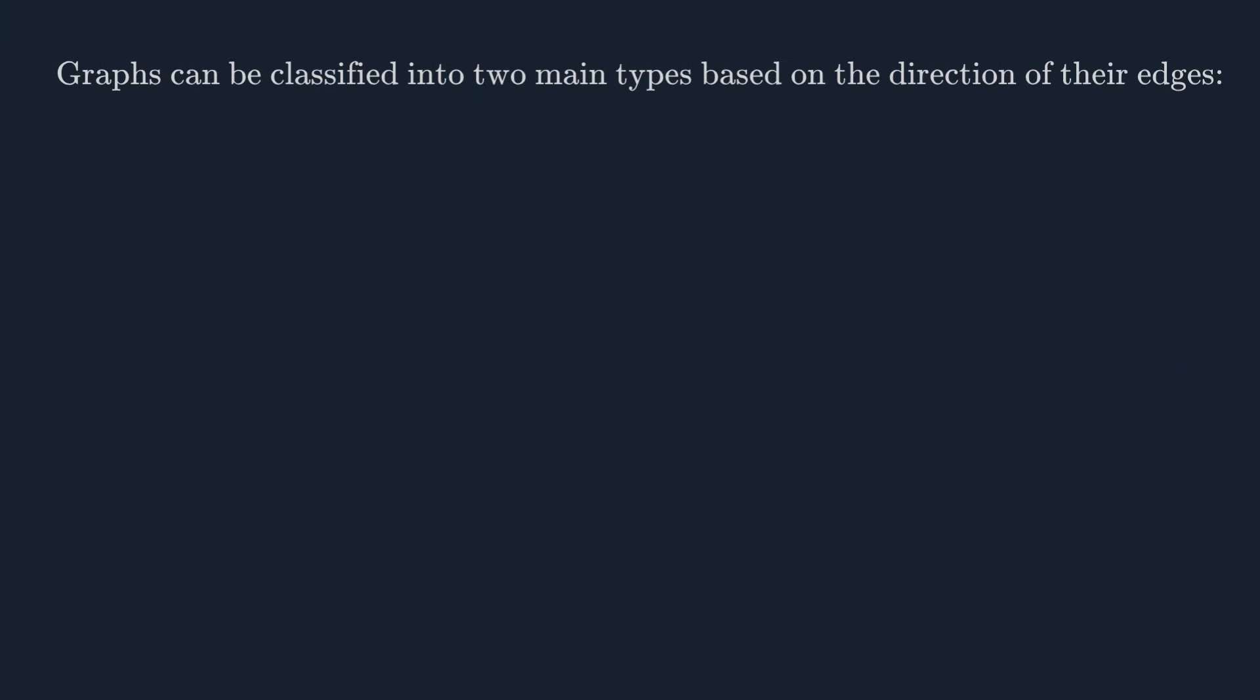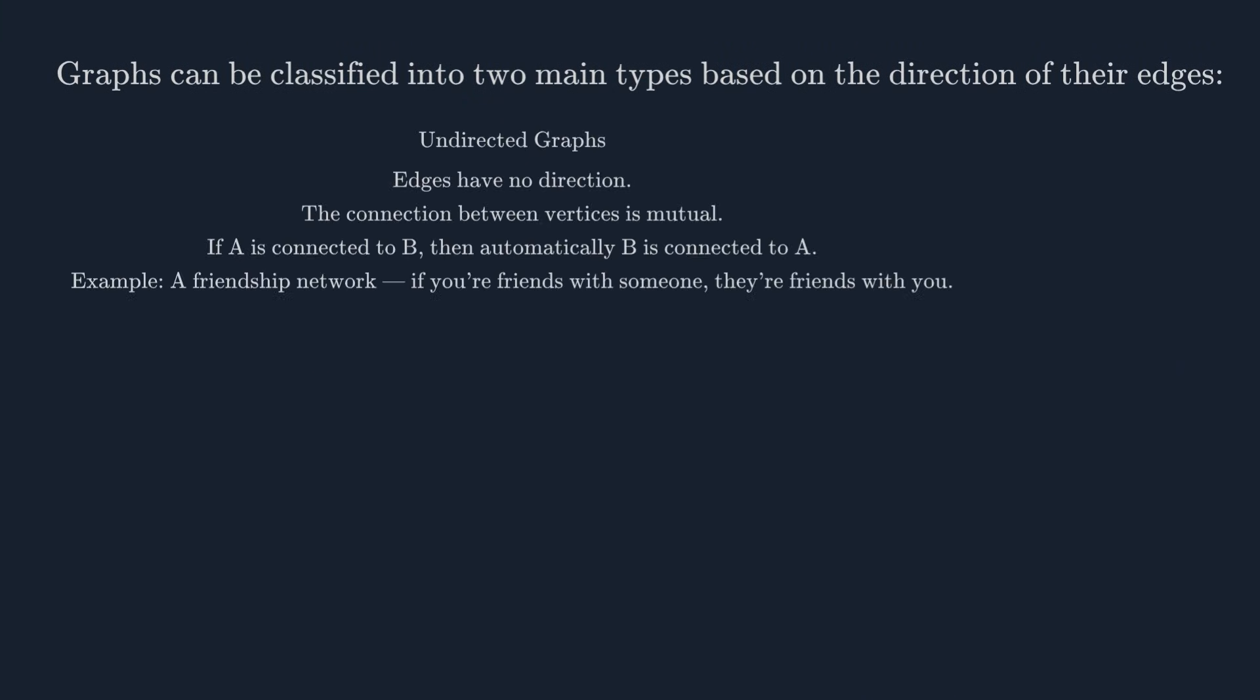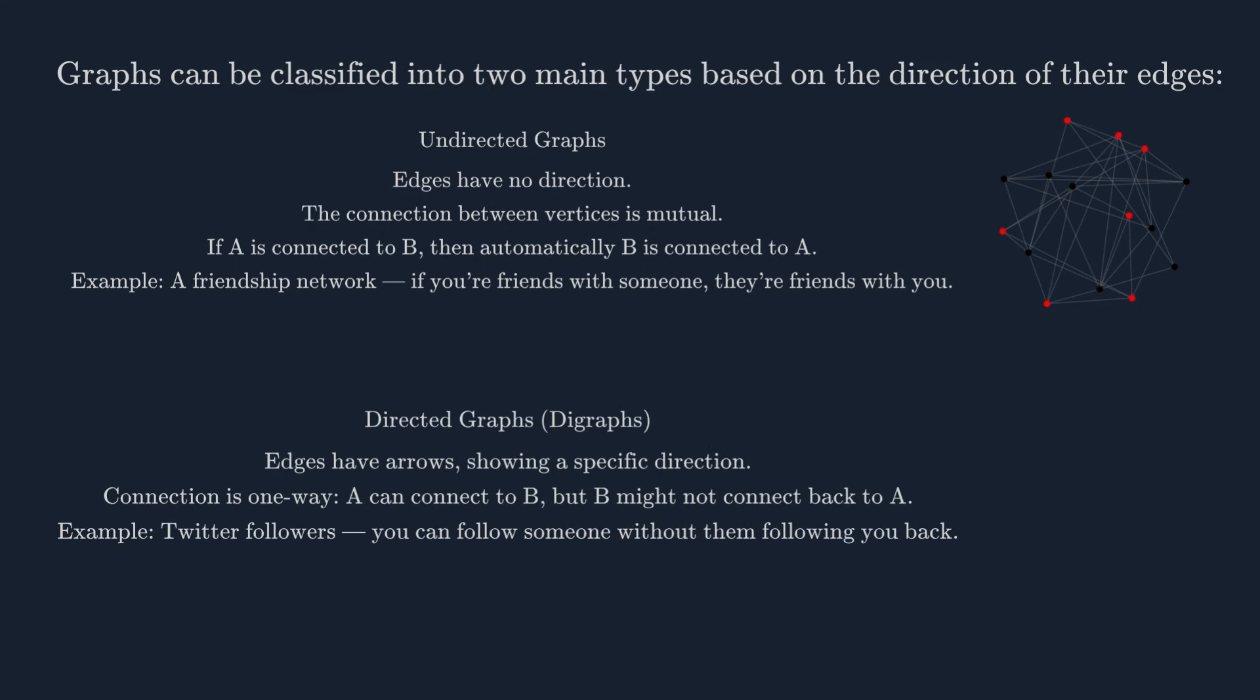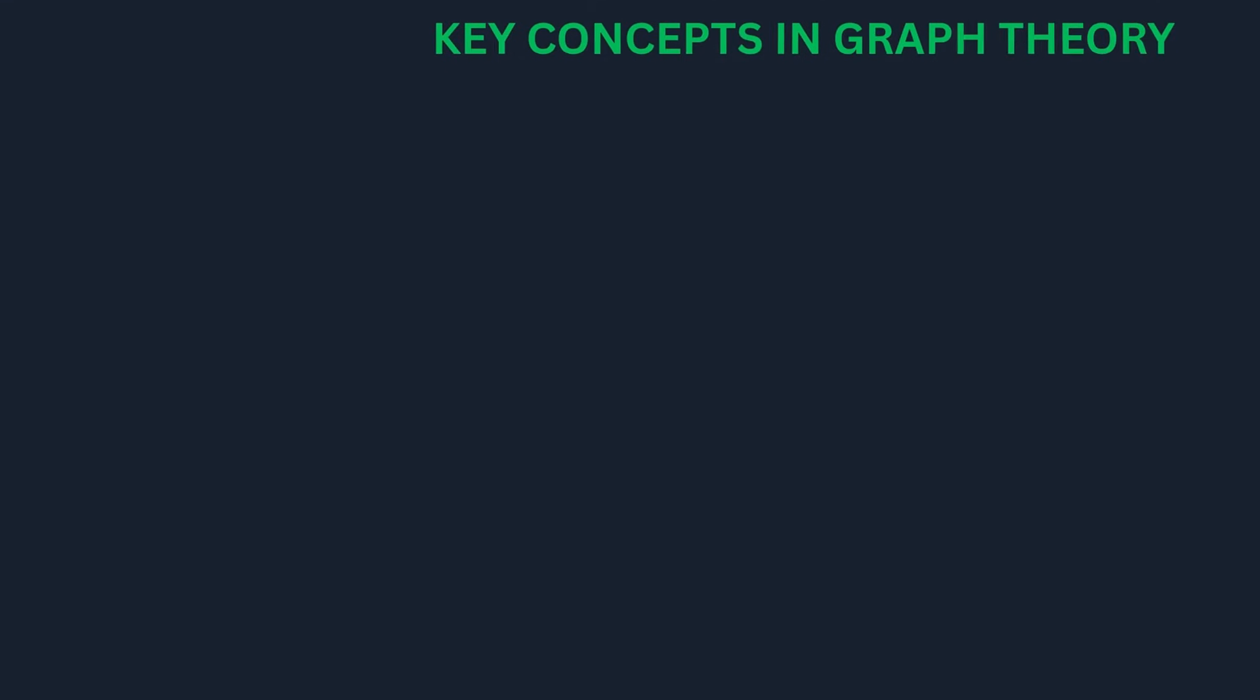Graphs can be directed or undirected. In an undirected graph, the edges have no direction—if A is connected to B, then B is connected to A. In a directed graph, or digraph, the edges have arrows, meaning the connection only goes one way. A friendship graph is undirected: if you're friends with someone, they're friends with you. A Twitter follower graph is directed: you can follow someone without them following you back.